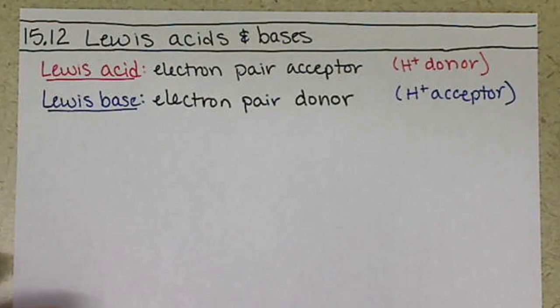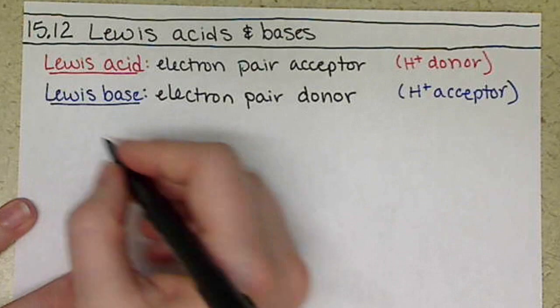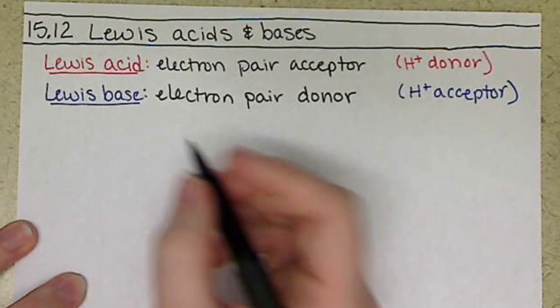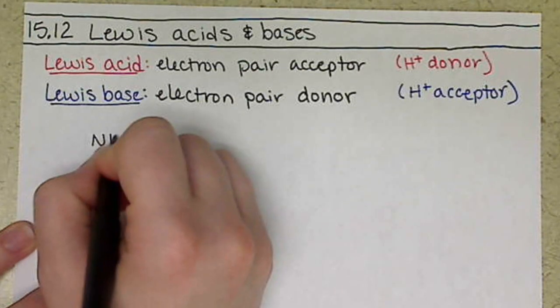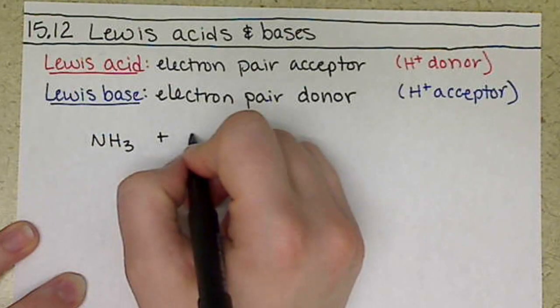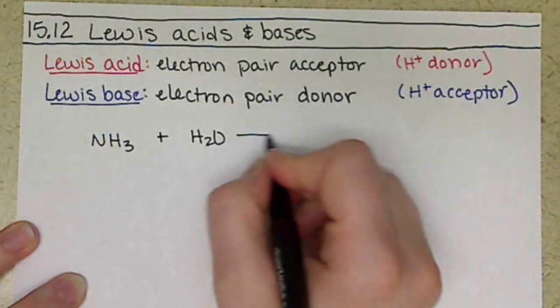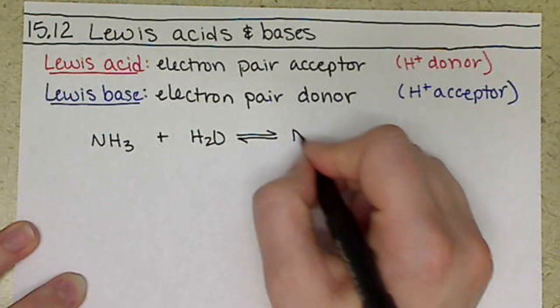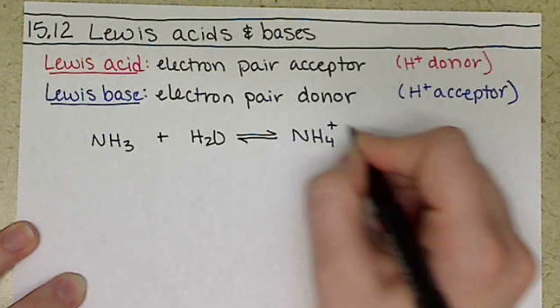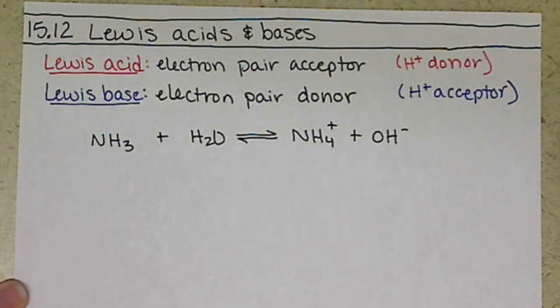So in order to understand this acid-base characteristic, we need to look at our Lewis structures. So we want to look at, say, NH3. We know as a base, we'll force water to be our acid. It's weak, so we're going to form NH4+ and OH-.